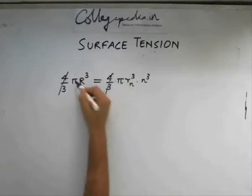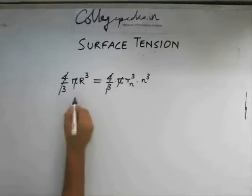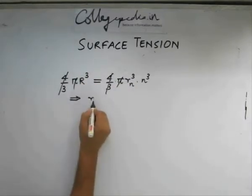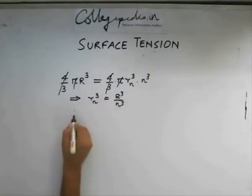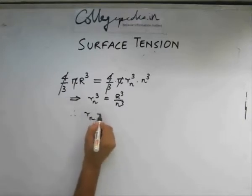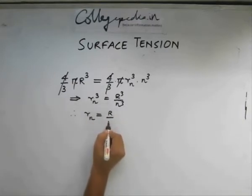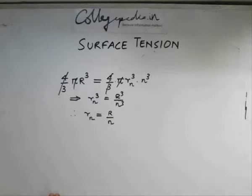So let us eliminate these. So what we have is rn cube is equal to r cube by n cube. Therefore rn is found out to be r by n. This is what rn is. This solves the first part of the question.